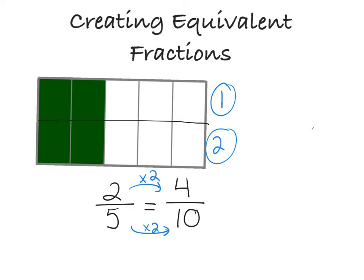So we can say that 2 fifths is equivalent to 4 tenths. Because I didn't actually change the model, I just added a line. I broke it. I made the denominator different by dividing it up into more sections.